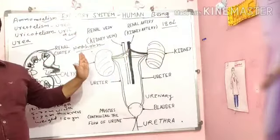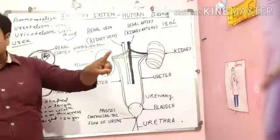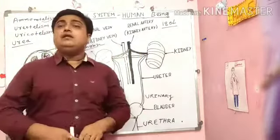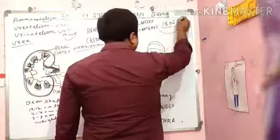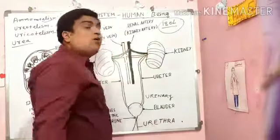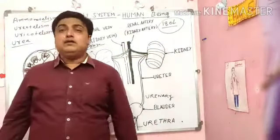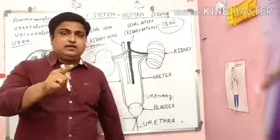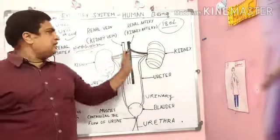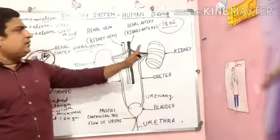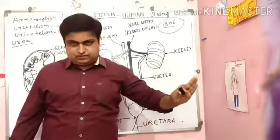The function of the kidney is that it filters the blood. In 24 hours, our kidneys filter 180 liters of blood.